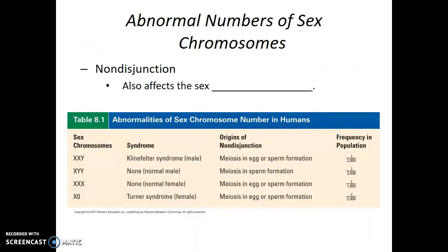You may wonder if it's possible to have an abnormal number of sex chromosomes, and the answer is yes. Having abnormal numbers of sex chromosomes is typically far less detrimental than having an abnormal number of autosomes. Non-disjunction can also affect the sex chromosomes. In humans, biological sex is determined by the presence of a Y chromosome. So if an individual has no Y chromosome as their sex chromosome, their biological sex will be female.